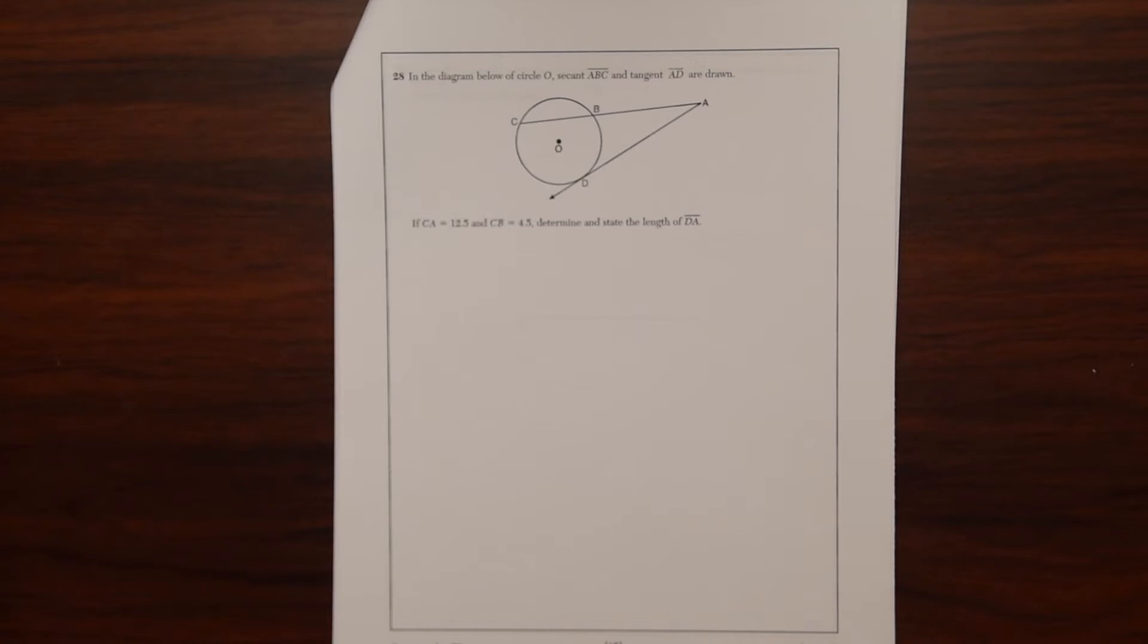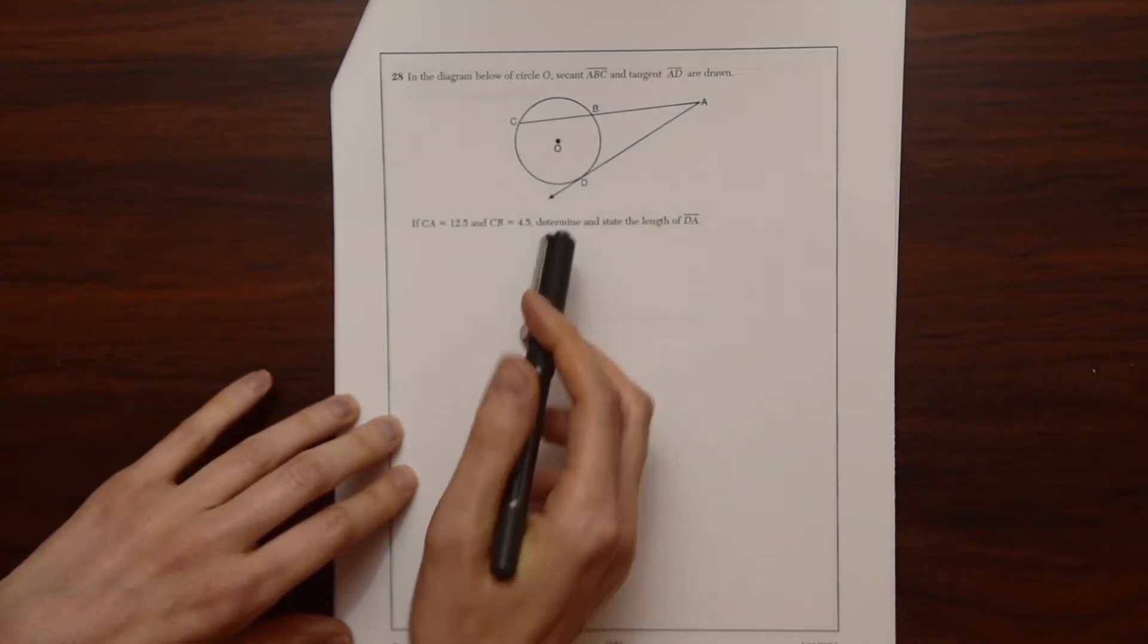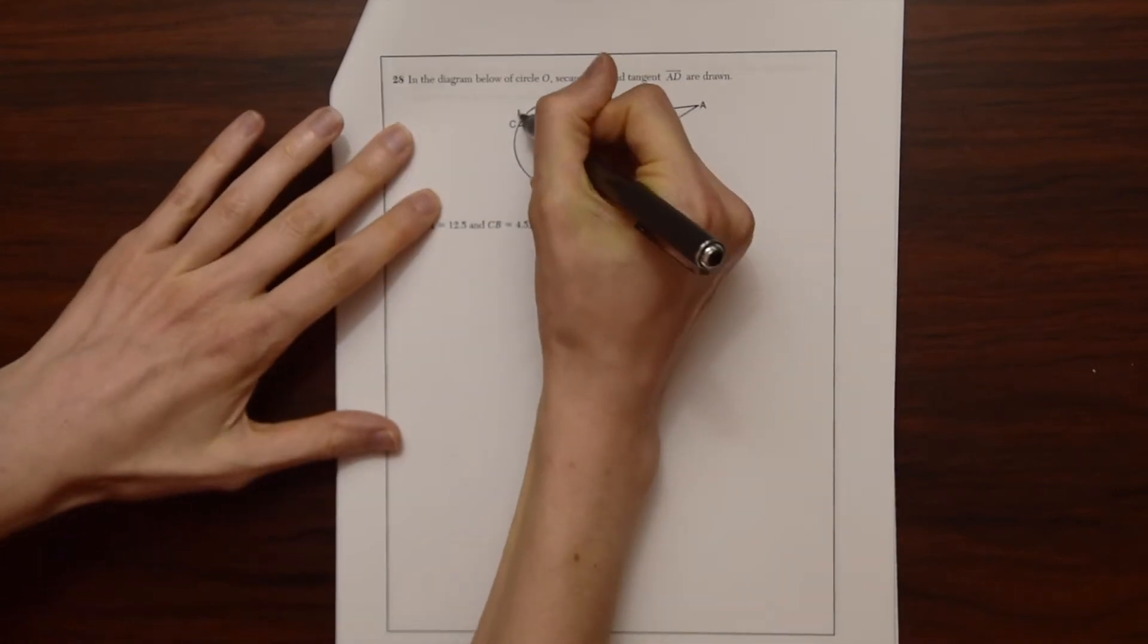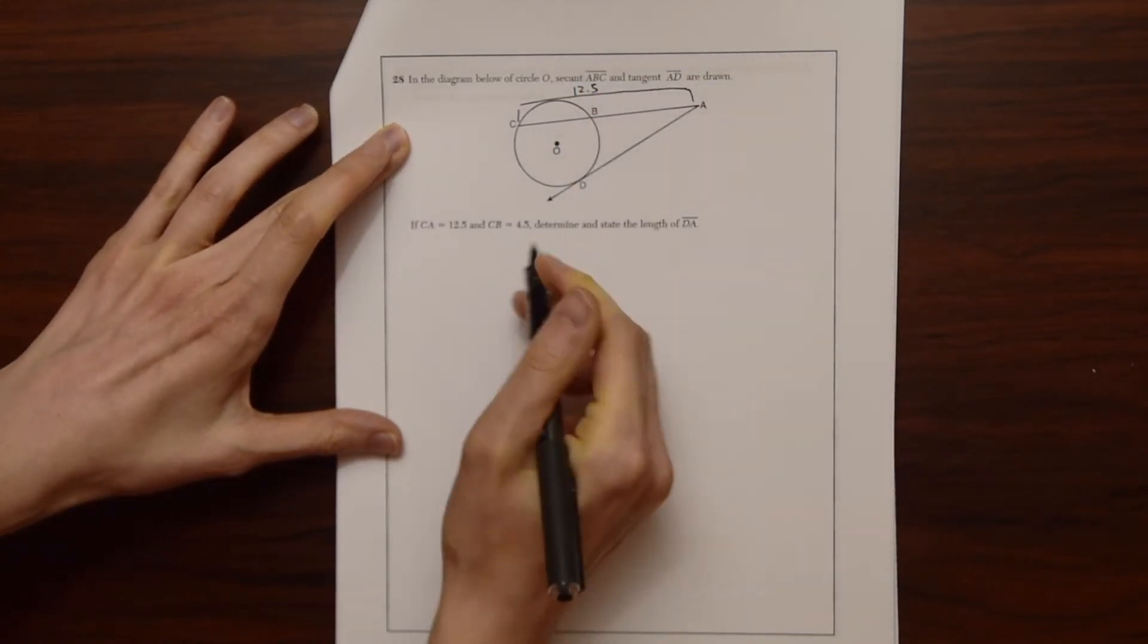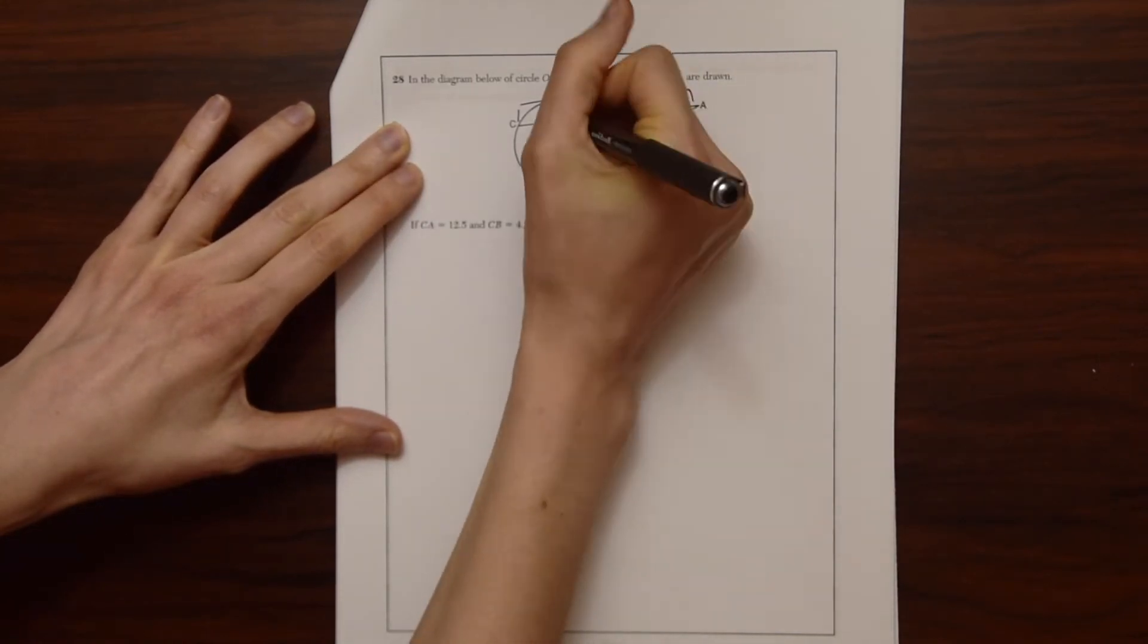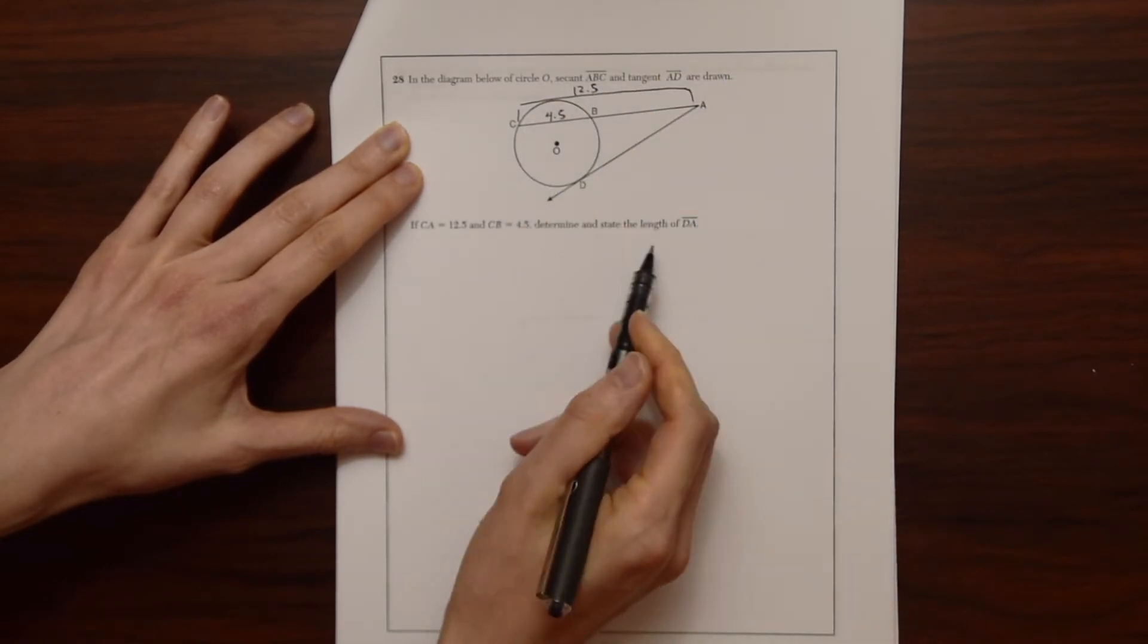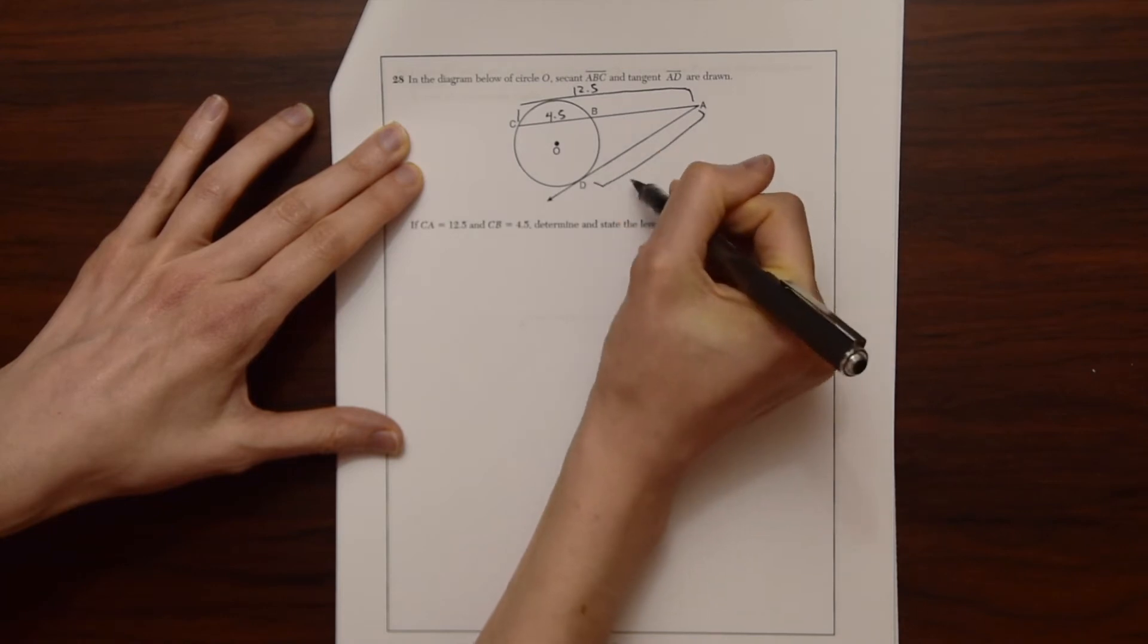In the diagram below of circle O, secant ABC and tangent AD are drawn. If CA, so this whole thing, is CA, is equal to 12.5 and CB is 4.5, so this is CB right here. Determine and state the length of DA. So we want to find this whole length, DA, right here.